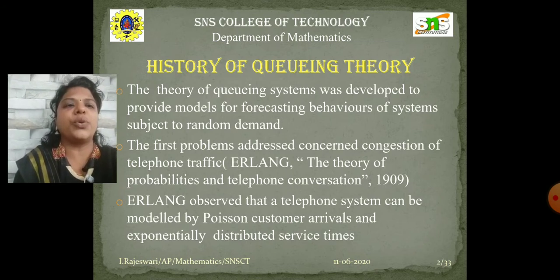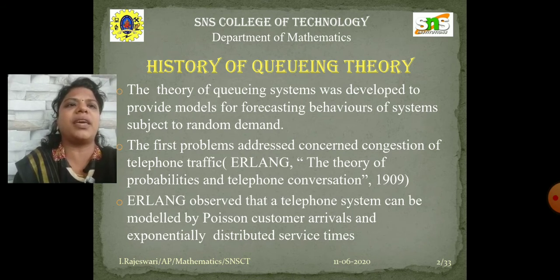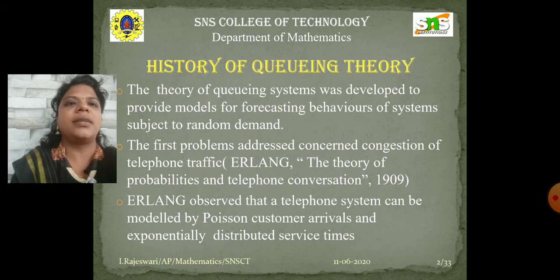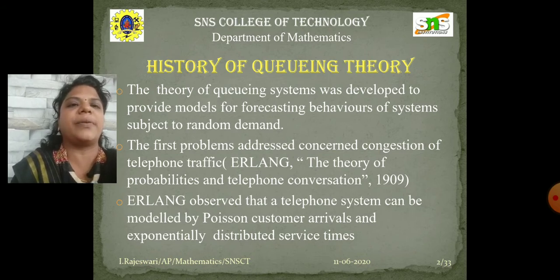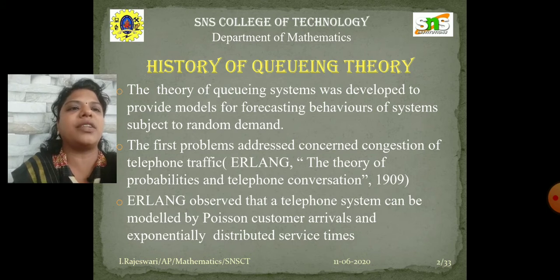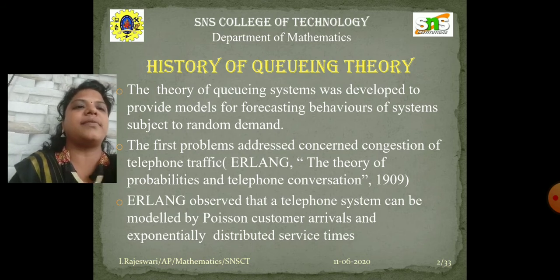The theory of queuing systems was developed to provide models for forecasting behaviors of systems subject to random demand. The first problems addressed were congestion of telephone traffic. In 1909, Erlang developed the paper titled 'The Theory of Probabilities and Telephone Conversation.' Erlang observed that the telephone system can be modeled by Poisson customer arrivals and exponentially distributed service times.